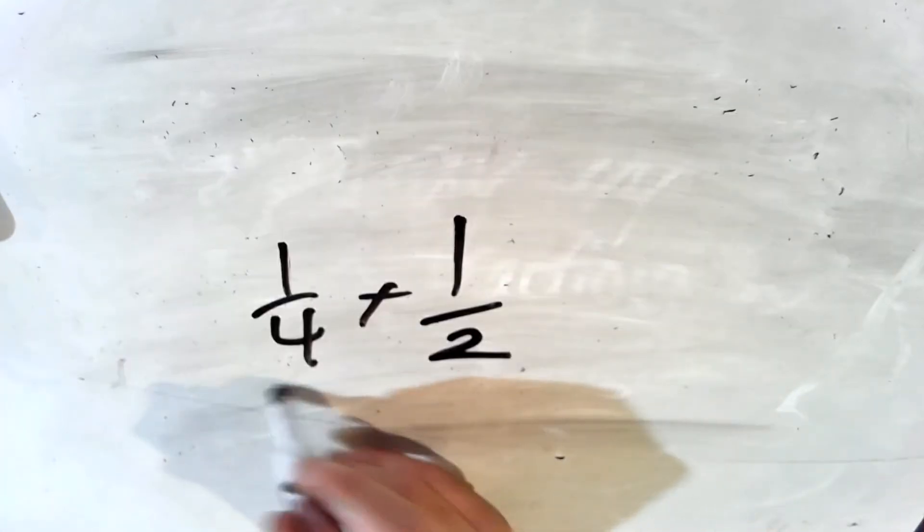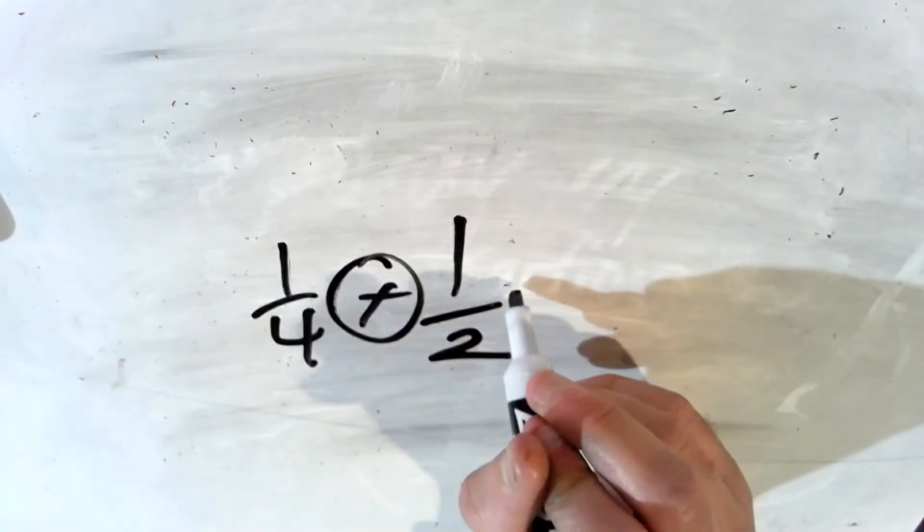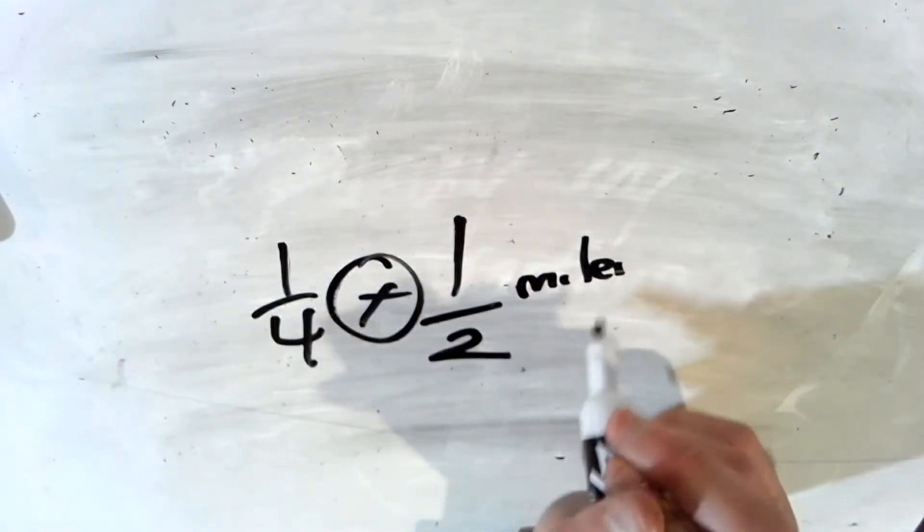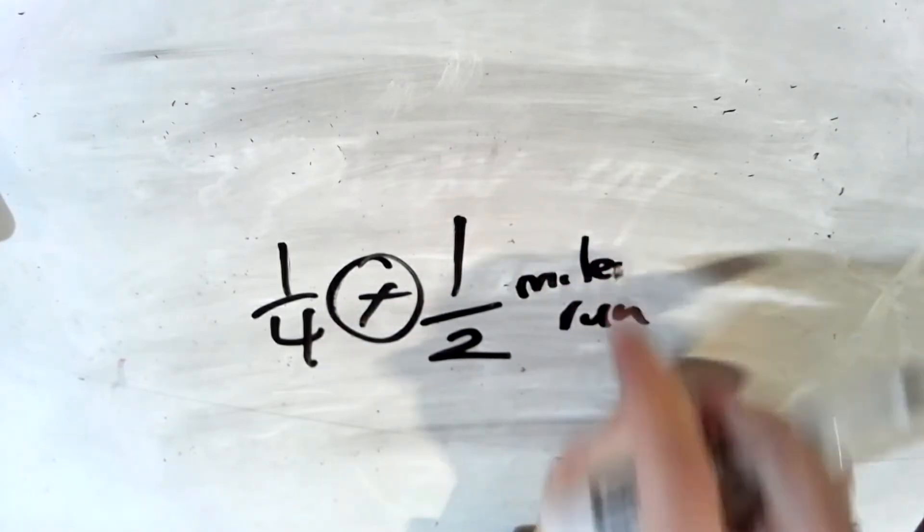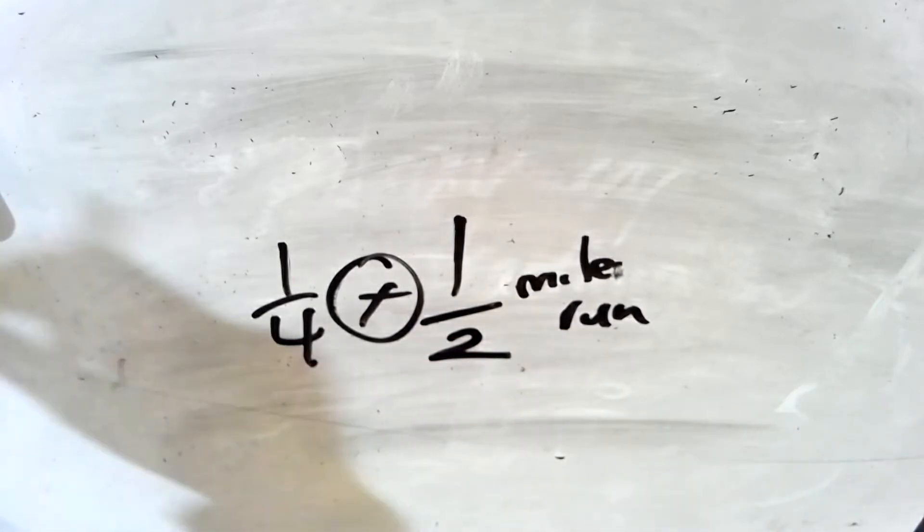So for example, in the workbook, the first problem says Janet runs one fourth of a half mile run. So one half mile run. Janet runs one fourth of that. Of means multiply. So we're doing one fourth times one half.